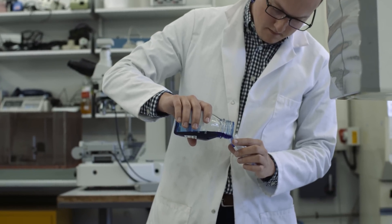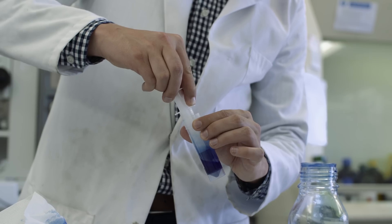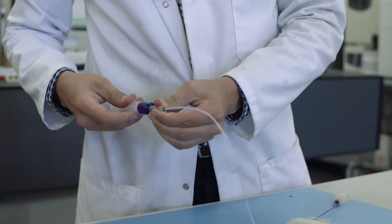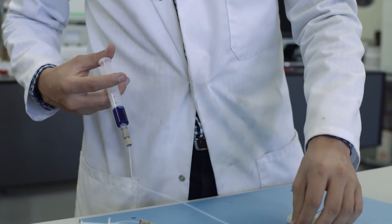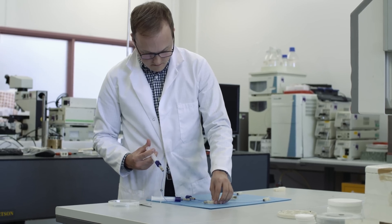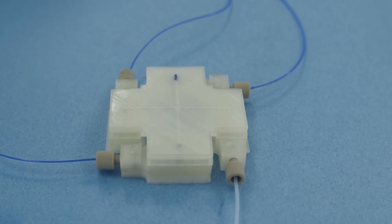Previous researchers have discounted this type of printing because they found that it leaked or they couldn't see through it. But by refining the print characteristics, I found that if you avoided under-extrusion, you could make the devices both transparent and watertight.